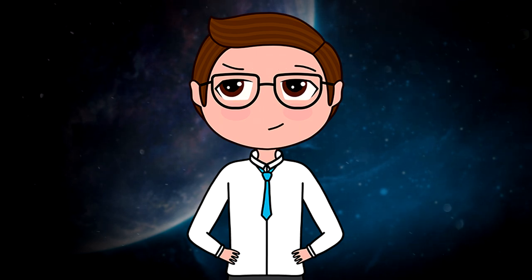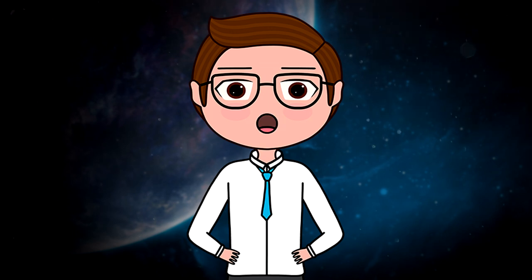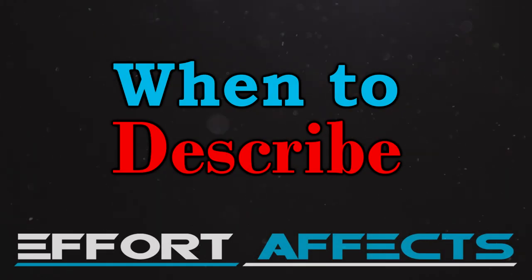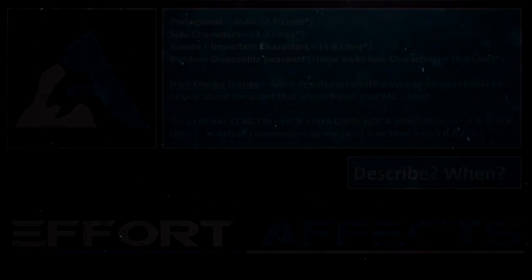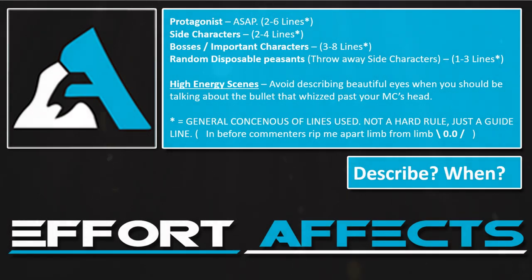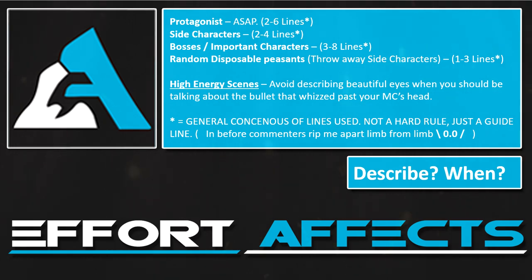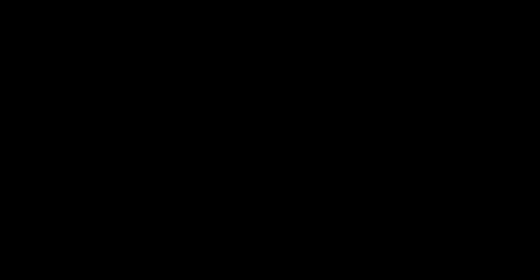Do not be afraid to mix and match these methods — you don't need to pick one and stick to it. You can start by dripping information, move on to comparative, and then finish with a light descriptive instance. When to describe: for your protagonist, describe them as soon as humanly possible. For other characters, describe them as soon as you see them. The only exceptions are high-energy scenes — your MC will not gaze at a love interest's blue eyes under a hail of bullets or describe how luscious their hair was in an intense sword fight. Reserve your description for the earliest possible low-energy scene.